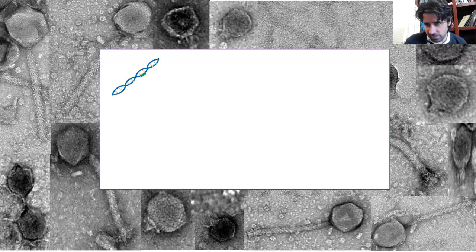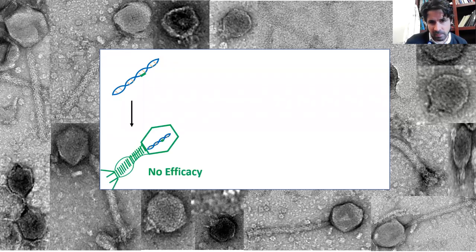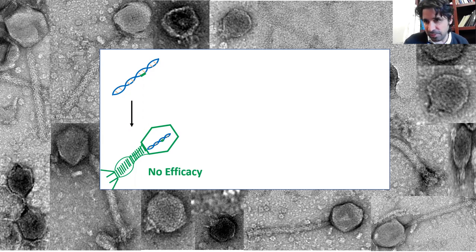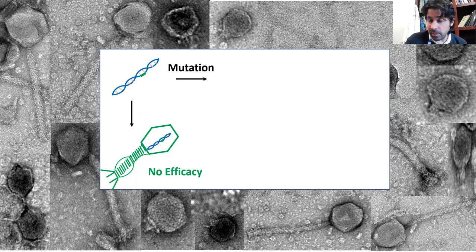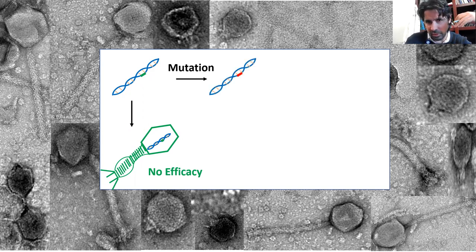The premise is very simple. You might have a phage that has a certain genotype — here it is as the green mutation — and perhaps that confers the inability to lyse a bacterium, a target host. If you're using phage for therapy, for example, you'd have no efficacy because it doesn't kill its host, so it's a green phenotype. But it can mutate — that's a very powerful transformative mechanism of phage — and its mutagenic ability allows it to change at the genetic level.